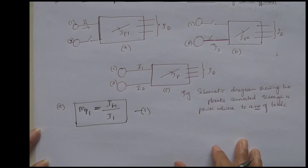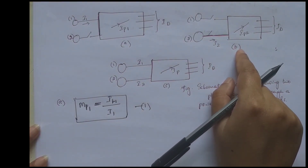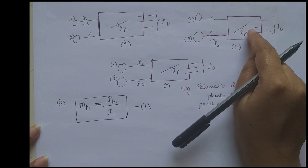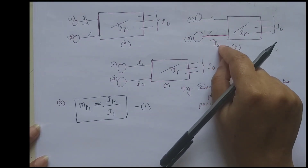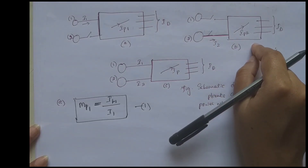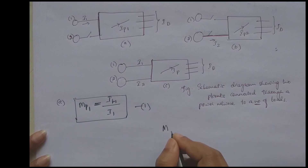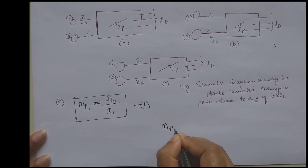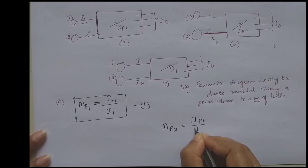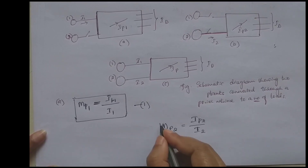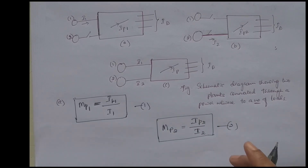Similarly, when plant 2 alone supplies (case B), the current through line P is IP2 and the current from the generator is I2. The current distribution factor MP2 is equal to IP2 divided by I2. Take this as equation 2.